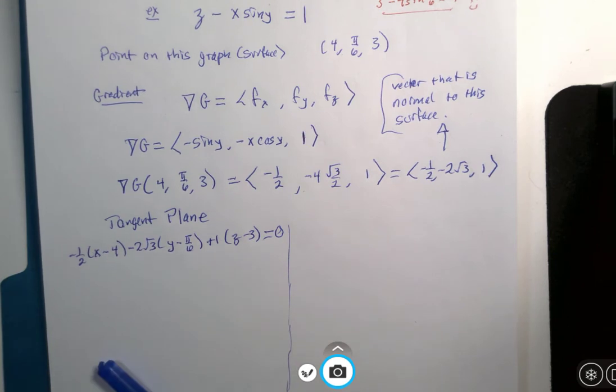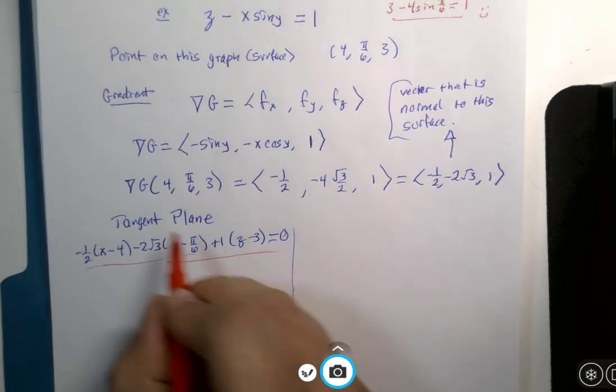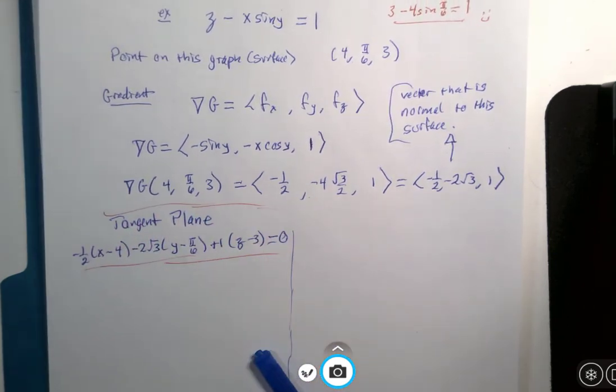This would be the plane that is tangent to this 3D surface, which we have no idea what it looks like.